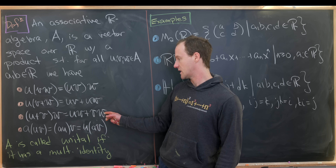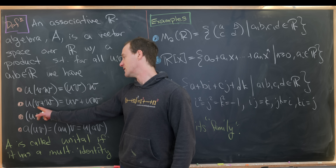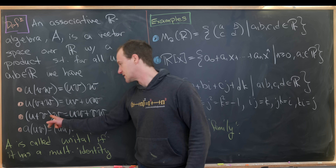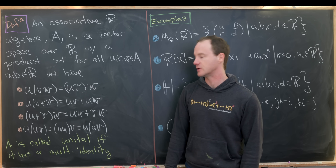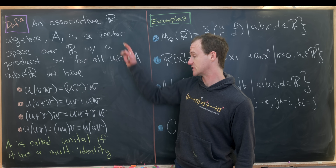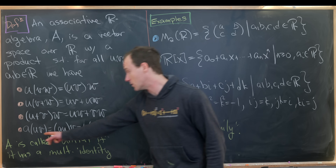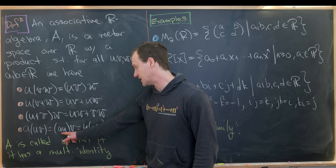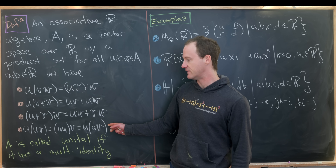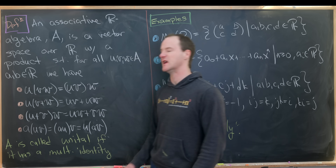Then we've got a distributive rule — left distribution: U(V + W) = UV + UW, and right distribution: (U + V)W = UW + VW. Finally, we've got a rule for the interaction of scalar multiplication and this product in our vector space: A times (UV) is the same thing as (AU) times V, which is the same thing as U times (AV). This might look like commutativity, but it is not, because A is a scalar, not a vector — it just says the scalar can be moved to any portion of the product.